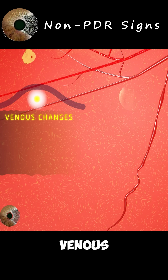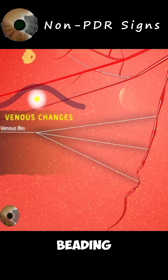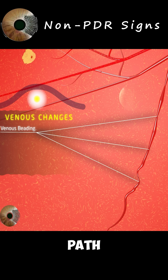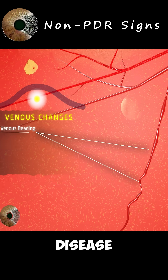Venous changes due to venous wall dysfunction include venous beading, where focal narrowing and dilation are seen along the vessel path. This sign represents a moderate severity of the disease.